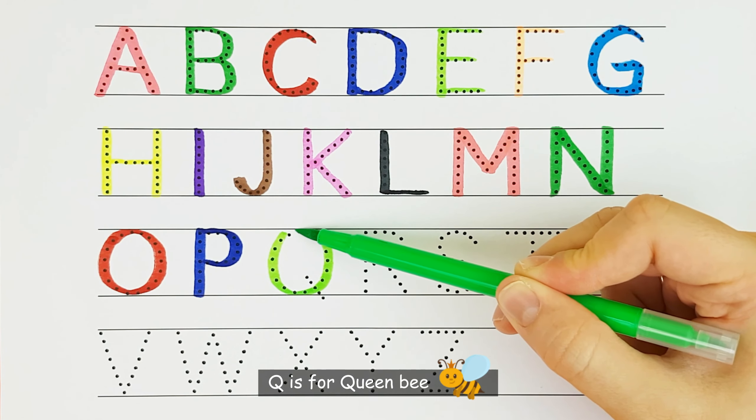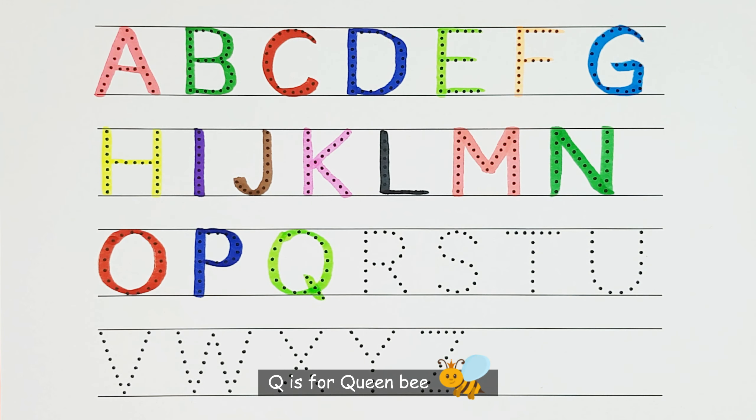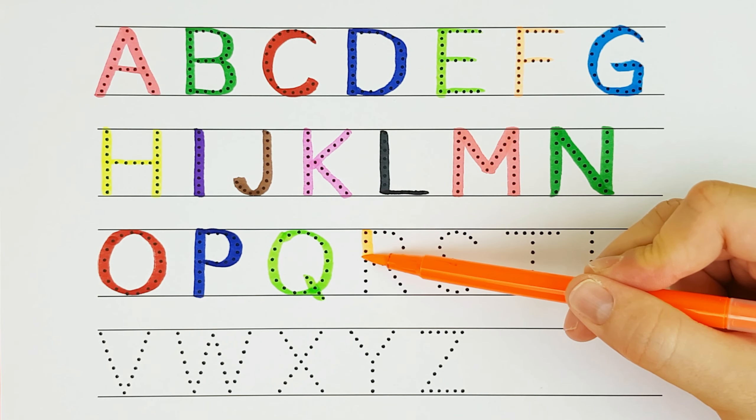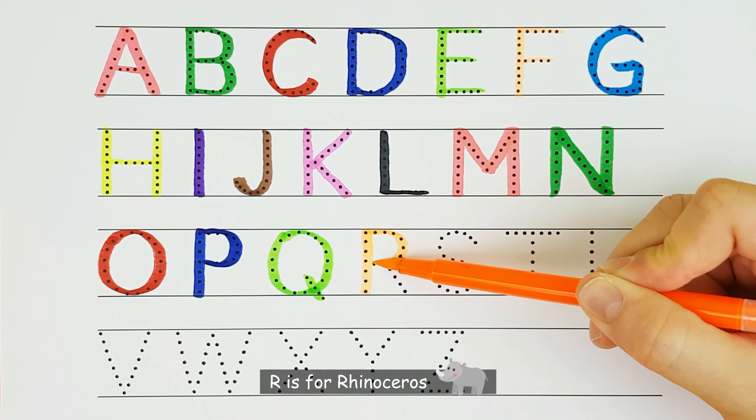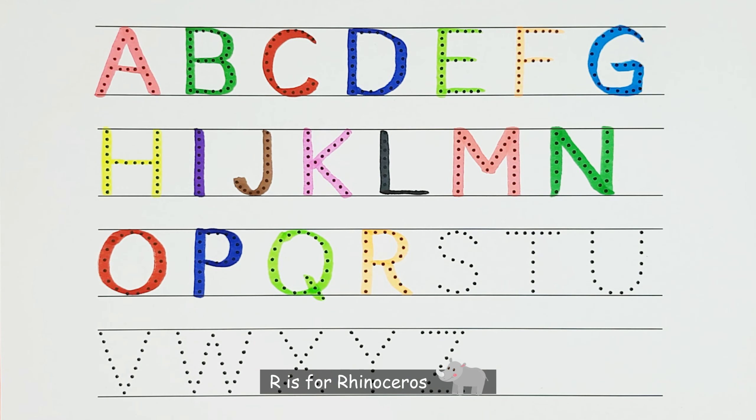Q. Q is for queen bee. Q. R. R is for rhinoceros. R.